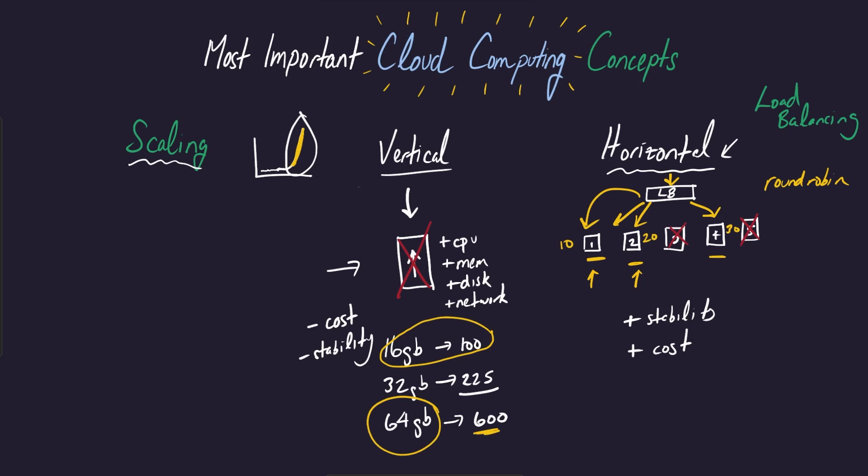You can also use other methods like utilization of resources on the machine. So say you're at like 99% CPU utilization on the first machine, but on the second, maybe you're at 50, and then on the third, you're maybe at like 20. Then the request can be configured to go to the machine with the lowest amount of utilization.